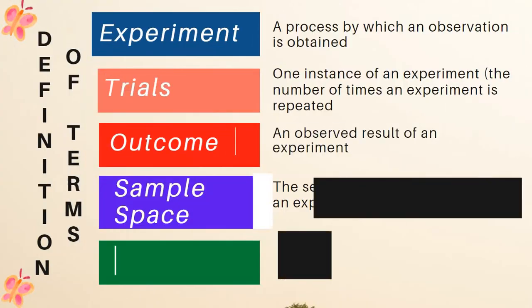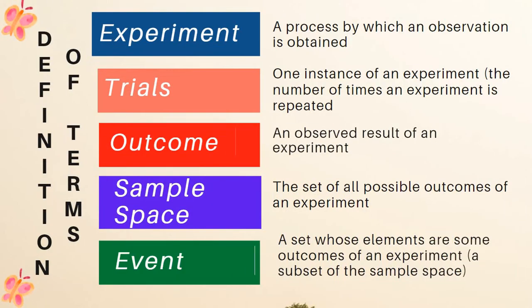Here are some terms and their definitions related to probability. Experiment is defined as the process by which an observation is obtained. Trials tells the number of times an experiment is repeated.